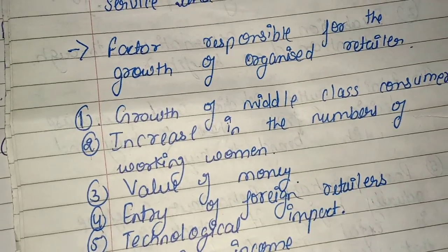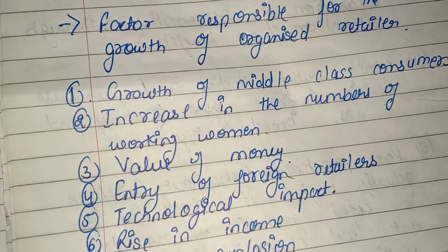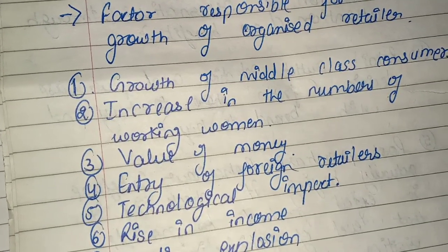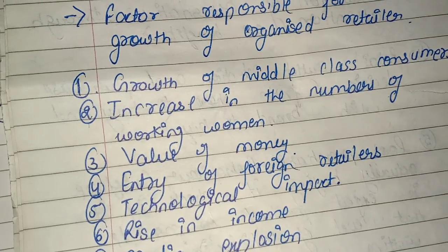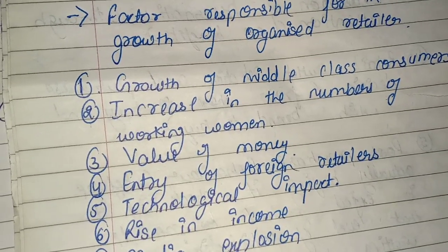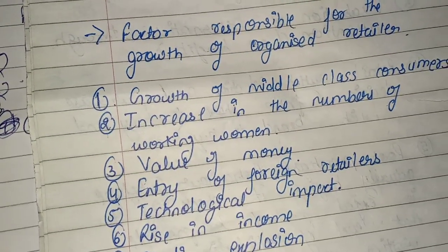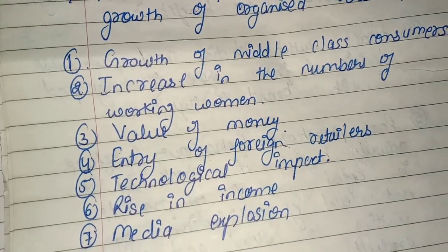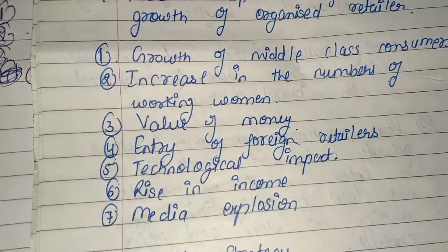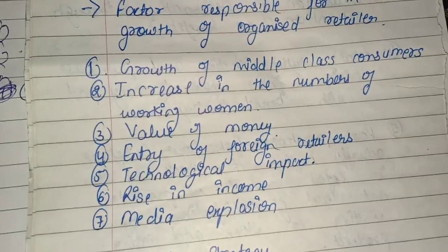There are some factors responsible for the growth of organized retail. The first factor is the growth of the middle-class consumer — the middle class drives growth for organized retailers. Other factors include the increase in retailing activity, value of money, entry of foreign retailers, technological impact, rise in income, and media explosion, because everyone wants to go digital.